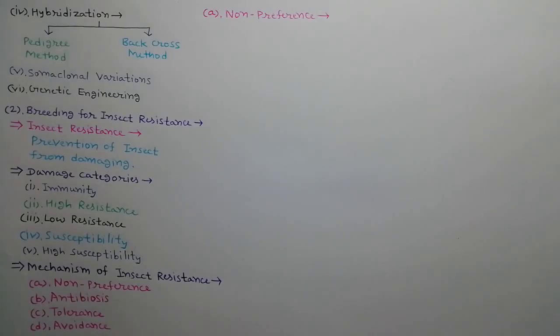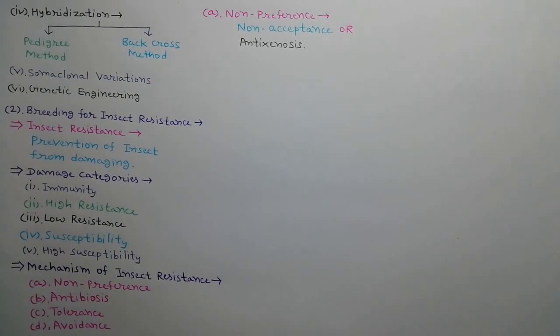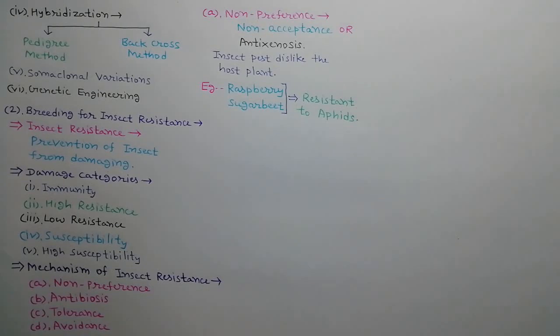First mechanism is non-preference. This mechanism is also called non-acceptance or anti-xenosis. In this mechanism, insects dislike feeding or egg-laying on specific host plant. For example, aphid resistance is found in raspberry and sugar beet.